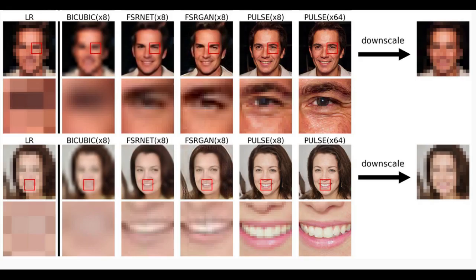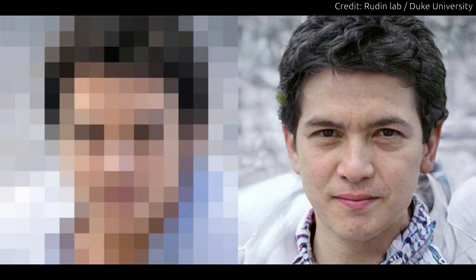Previous methods can scale an image of a face up to eight times its original resolution. But the Duke team has come up with a way to take a handful of pixels and create realistic-looking faces with up to 64 times the resolution, imagining features such as fine lines, eyelashes and stubble that weren't there in the first place.